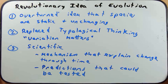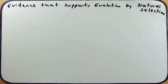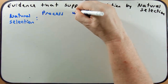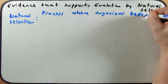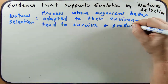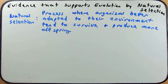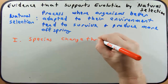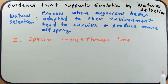Now let's talk about the categories of evidence for evolution — the evidence that supports evolution by natural selection. It's a good idea to remind ourselves that natural selection is the process whereby organisms better adapted to their environment tend to survive and produce more offspring. Thinking about natural selection, we could make two predictions: first, that species change through time — those with better adaptations survive and make new progeny with that new adaptation.